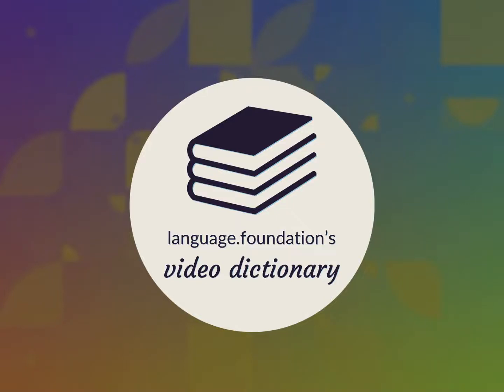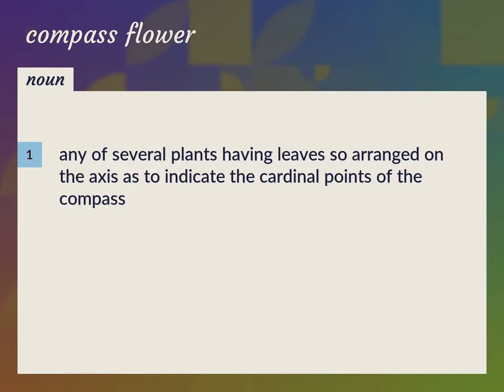Language.Foundation's Video Dictionary, helping you achieve understanding. Compass Plant: any of several plants having leaves so arranged on the axis as to indicate the cardinal points of the compass.